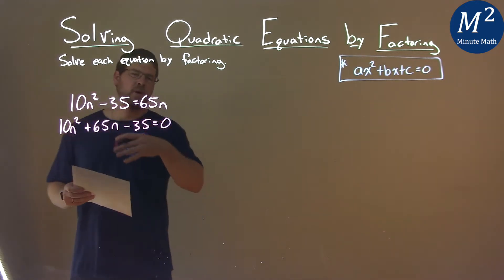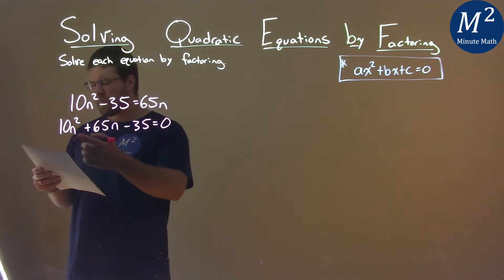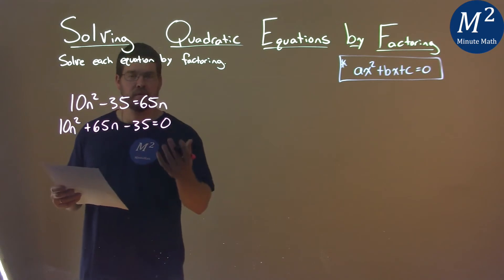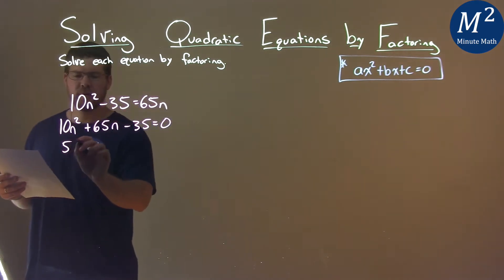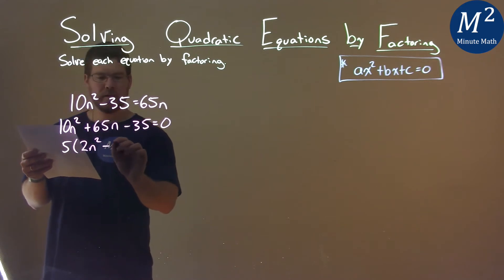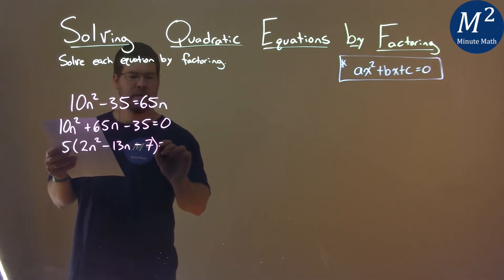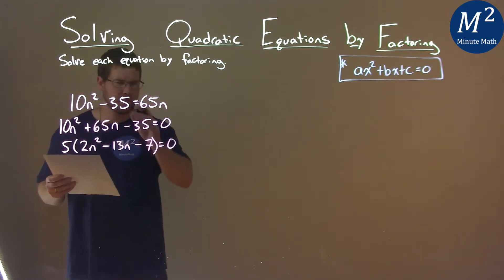Now, don't let these larger numbers scare you. Let's see if we can break this down. Each part here, I see a 5 goes into it. So if I pull out a 5, I'm left with 2n squared minus 13n minus 7, and that's equal to 0.